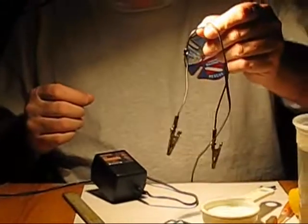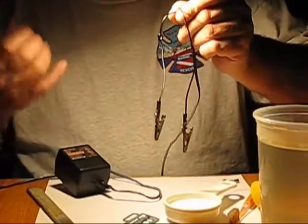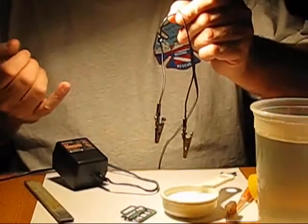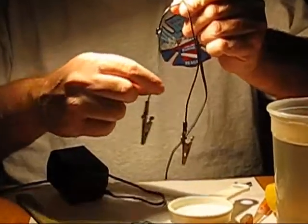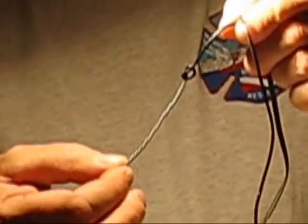On the other end where the cell phone plug was, we have these alligator clips. One is a positive and one is a negative. The positive is always going to have some kind of a mark on it. This one actually has a white stripe on it.